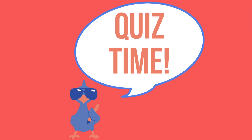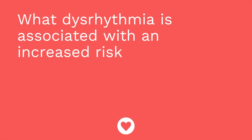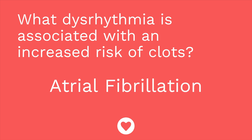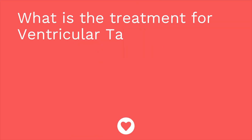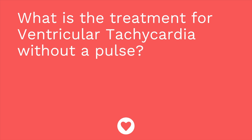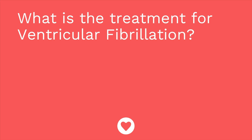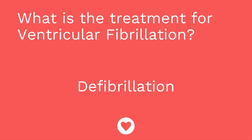Time for a quiz — I have three questions for you. First question: what dysrhythmia is associated with an increased risk for clots? The answer is atrial fibrillation, which is why anyone with AFib is put on an anticoagulant. Question two: what is the treatment for ventricular tachycardia without a pulse? The answer is defibrillation. Question three: what is the treatment for ventricular fibrillation? The answer is defibrillation again — defib VFib.